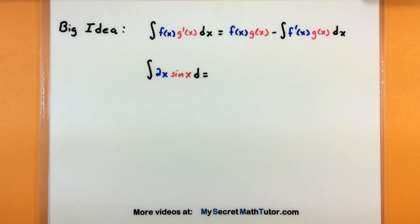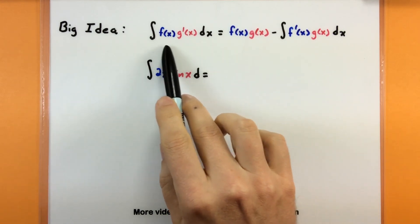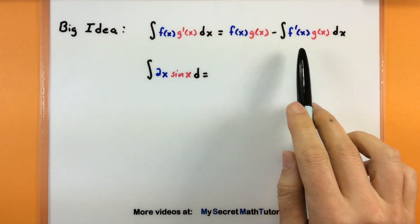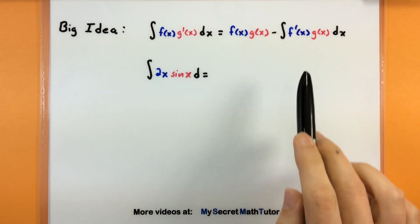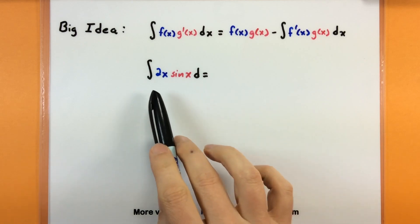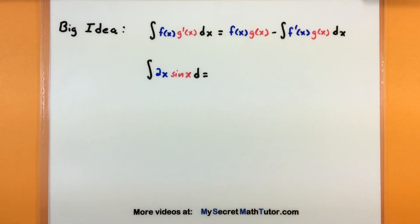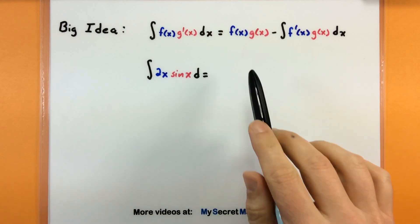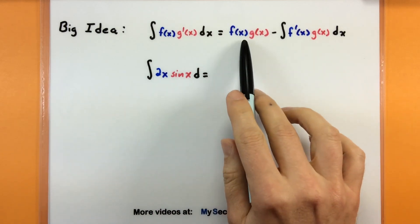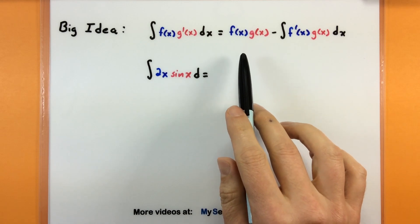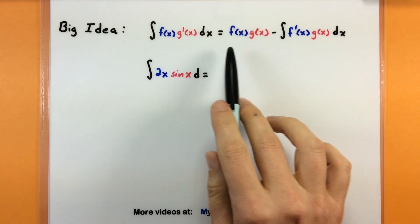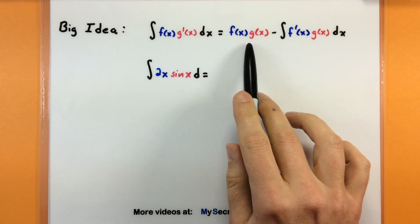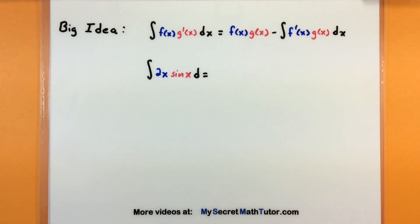The big idea is to take a fairly complicated looking integral and turn it into something much nicer. You can tell that from the formula in that we're starting with an integral on the left and when we're done we'll still end up with an integral but it will be nicer. As a quick example, maybe we have the integral of 2x multiplied by sine of x.